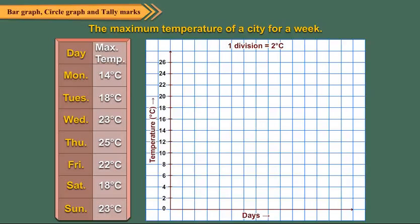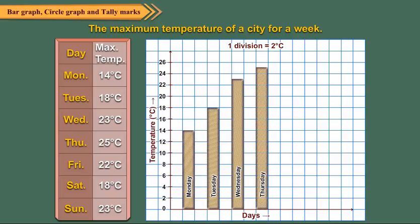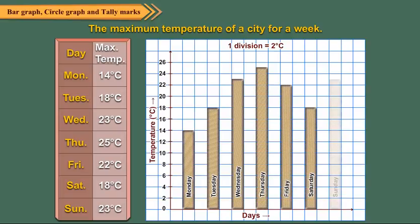Since seven days of the week are considered, so seven bars are to be constructed on the horizontal axis. Leave one division from the vertical axis and draw a rectangular bar to represent the temperature on Monday. Now draw bars to represent the temperatures of other days of the week, leaving equal gap between each bar. Shade the bars. Write the title and scale on the top of the graph.